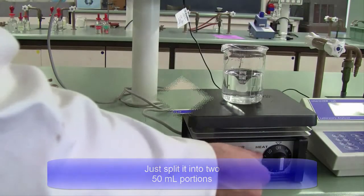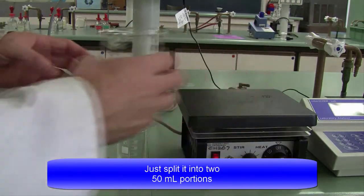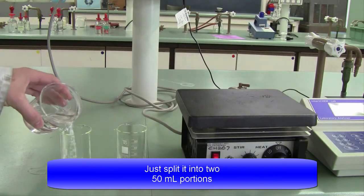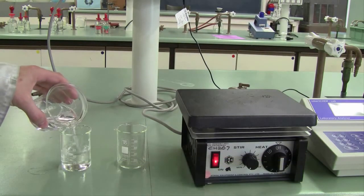Once you've measured the pH of that solution, I then want you to split it into three even 50 ml portions. It doesn't have to be extremely accurate, you can just pour by eye into beakers.